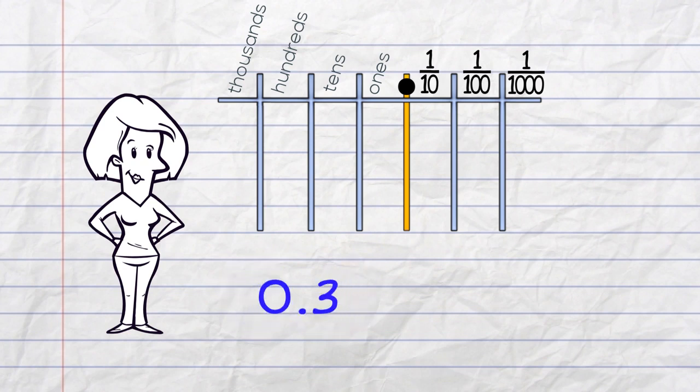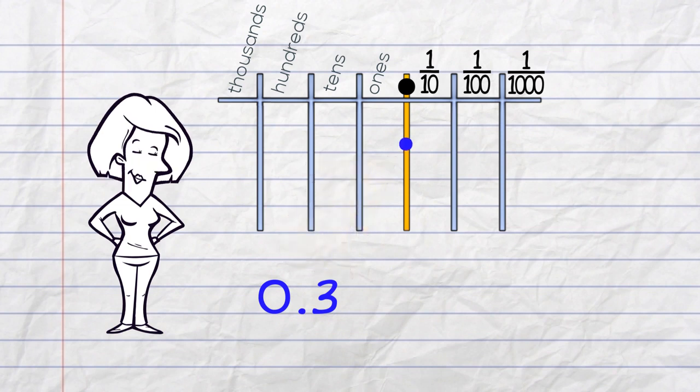If I have a value, we can put it into the place value chart. Line up the decimal point. And then it's one digit per column.